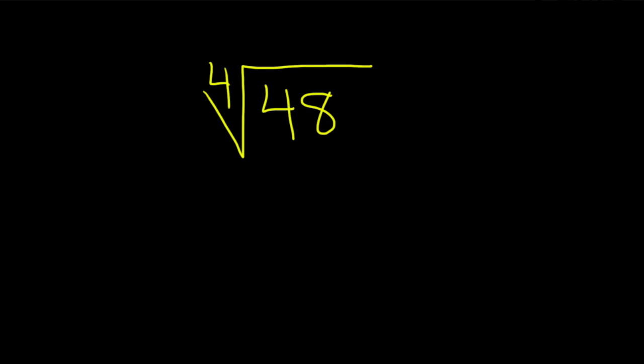Hi, in this problem we want to try to simplify the fourth root of 48. So in a problem like this, the first step is to take the radicand, which is the 48, and write it as a product of primes. Basically, you want to factor it.